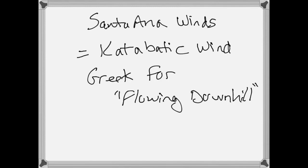Hello everyone. Today I'd like to talk about Santa Ana winds. Santa Ana winds are considered katabatic winds, and katabatic winds is Greek for flowing downhill. So you already know that the origin of this wind is going to be at some high place, and this wind is going to flow downhill, pick up speed, and potentially get a little bit warm and dry. Before we talk about Santa Ana winds, I'd like to talk about a couple of concepts first.